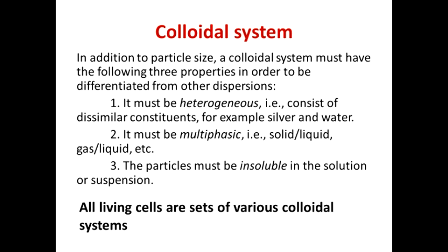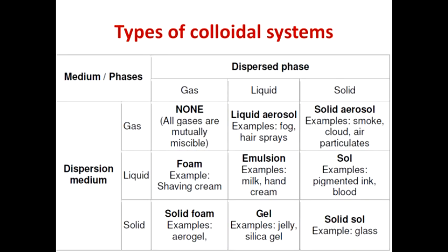Colloidal systems are heterogeneous — they are multi-phase, having several phases. Particles of these solutions are insoluble in solvent. All living cells contain particles of colloidal size; for example, blood is one of the colloidal systems. Another classification of colloidal systems is based on the aggregate state of the dispersion medium and dispersed phase. Gas-gas systems are not dispersed systems — they are true solutions — but all other types of colloidal systems are possible.